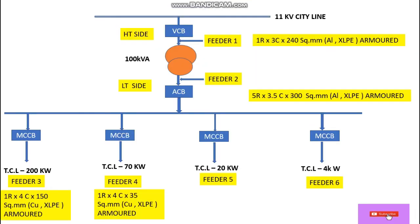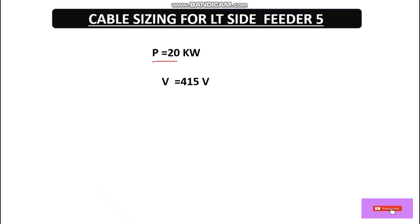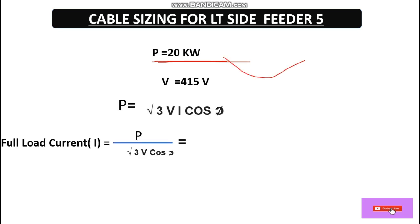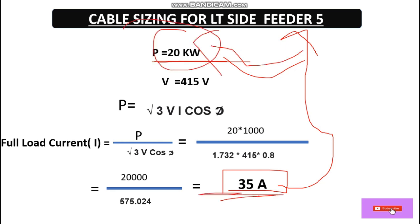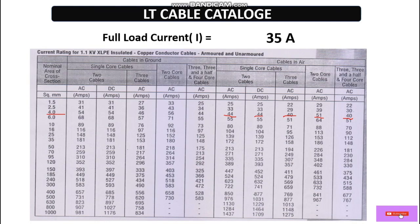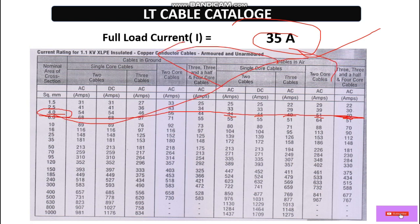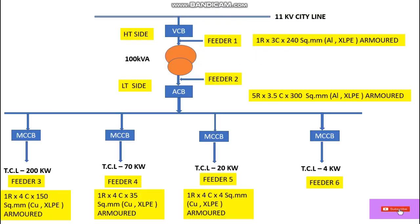Now let's move to feeder five. The total connected load for feeder five is 20 kilowatts. Calculating the current using the three-phase formula, the full load current comes out to 35 amperes. Looking into the cable catalog for 35A full load current, a 40A rating corresponds to a 4 sq mm cable. So for feeder five, one run four-core 4 sq mm copper XLPE armored cable is selected.